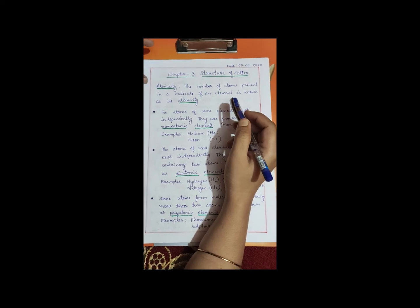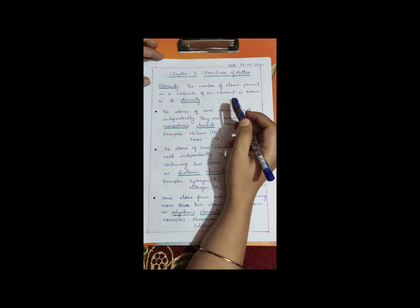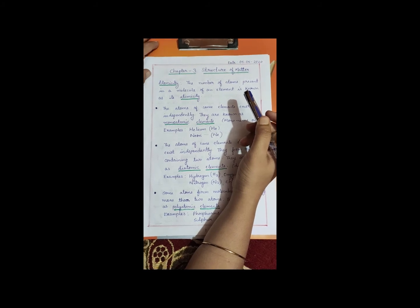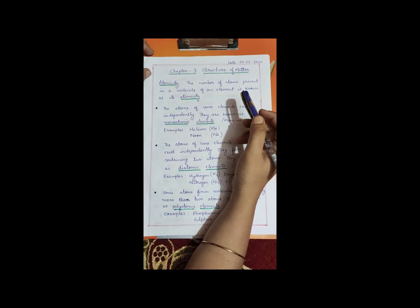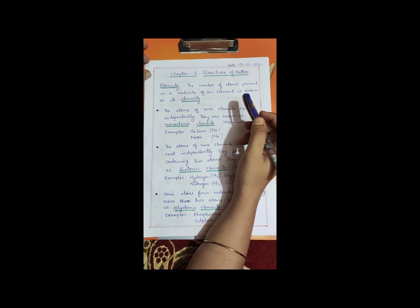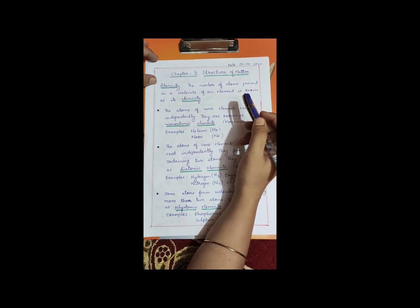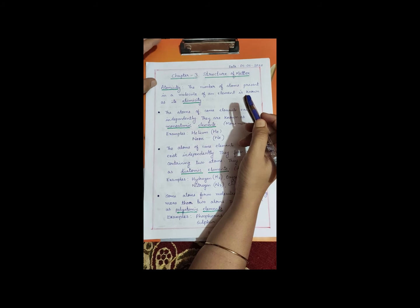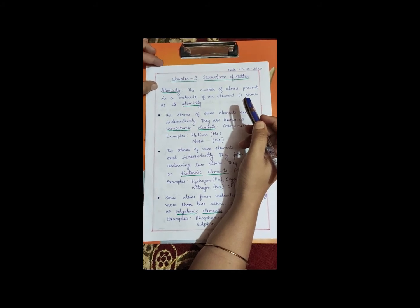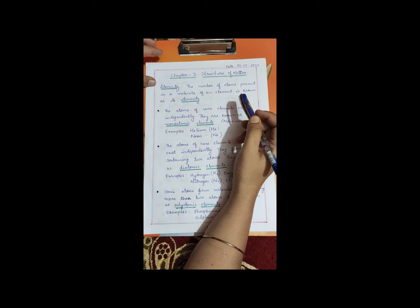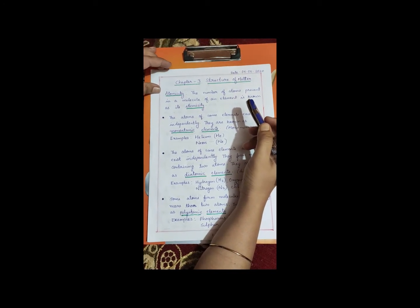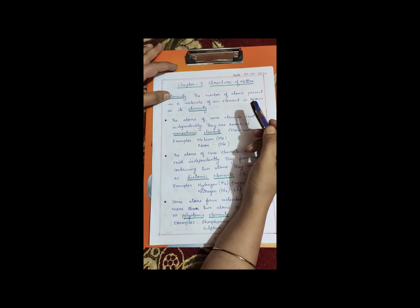Hello students, today let us continue chapter 3: Structure of Matter. I hope you understood the topics explained in the last class. Let's revise what we covered. We learned about elements, compounds, atom and molecule. We use symbols to represent elements and we use formulas to represent compounds. In today's class, we are going to learn about some new terms.